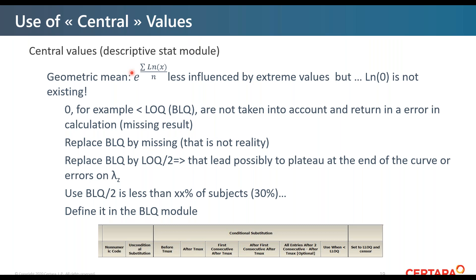If you use BLQ divided by two only for the first BLQ value and then missing for the others, you could end up calculating the mean on very few subjects at later time points — for example, on 24 subjects for 24 hours, only 18 at 36 hours, 12 at 48 hours, and only three at 72 hours — which is also a nonsense. What you can do is use the BLQ module in Phoenix to set up rules applied consistently across all subjects.